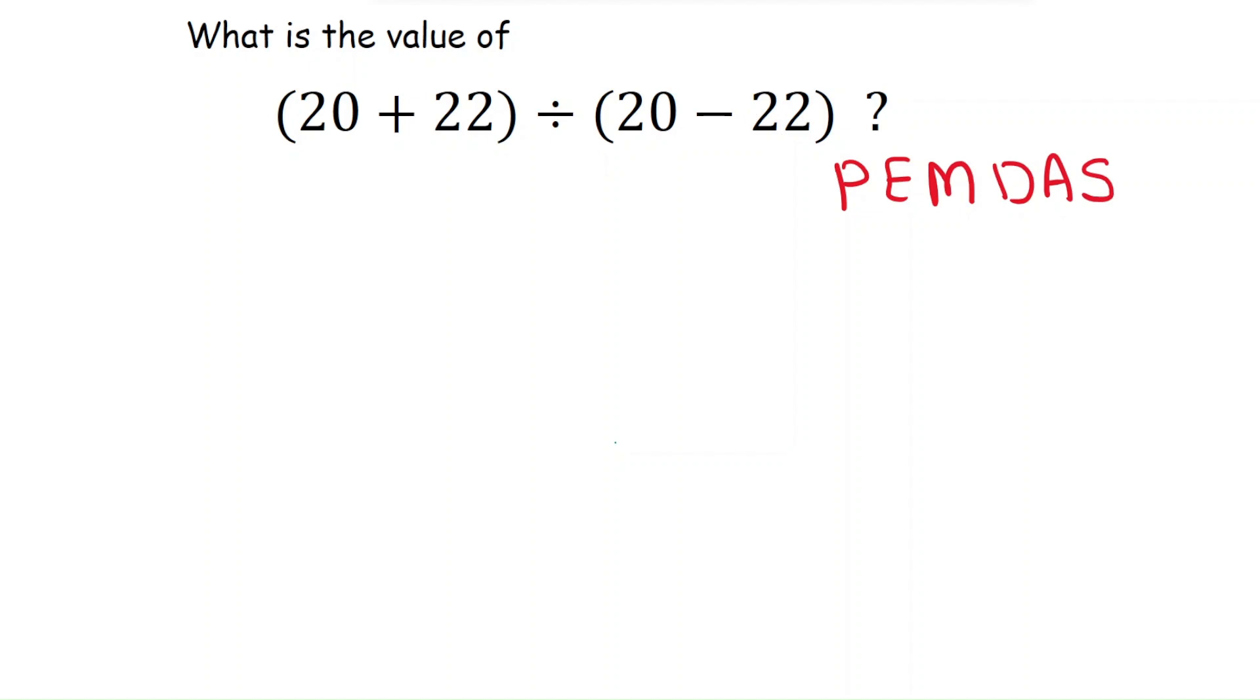So first, we have to solve the parentheses. First, 20 plus 22, that is 42, divided by 20 minus 22. Here the minus sign is the operation, so we will get minus 2.